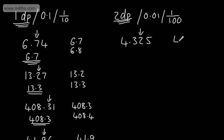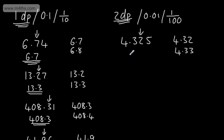So my choices, correct to two decimal places, are going to be 4.32 or 4.33. We can see the number next to it, which is in the thousandths column, is a 5 — therefore we're going to round up, and this will be 4.33, correct to two decimal places.